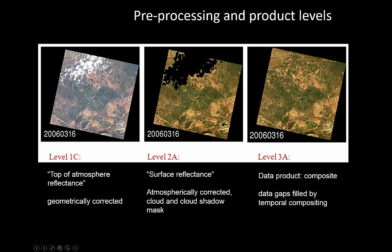A Level 3 product is where we use different overpasses in time to construct a complete image — often called a composite or mosaic — using temporal gap-filling or multiple data collections to produce one nice complete image.